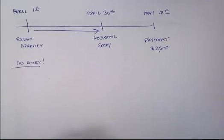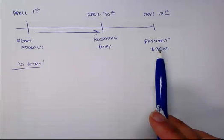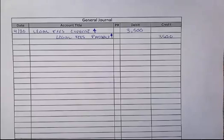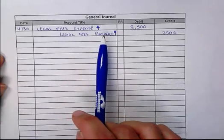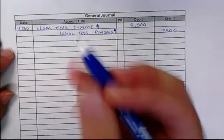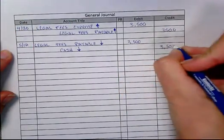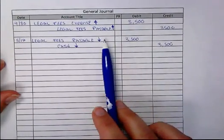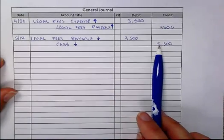The problem asks us to make the corresponding entry in May. On May 12th, the payment to the attorney was actually made. If a payment was made, cash is decreased. We no longer have a payable because we're reducing it, so we do the opposite of the payable that we set up on the 30th. The payable is decreased, and then cash goes down for the amount paid. These are the two entries for situation A.